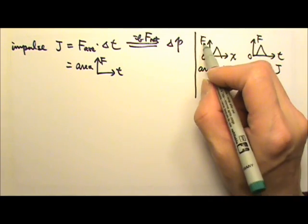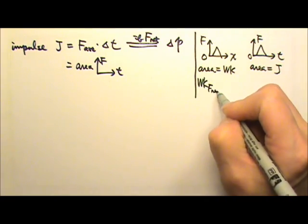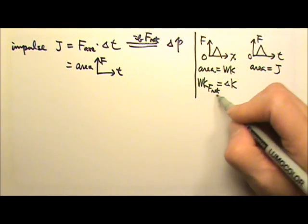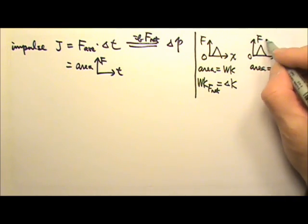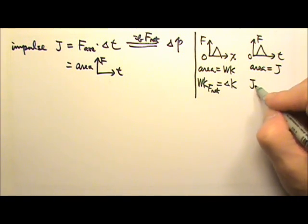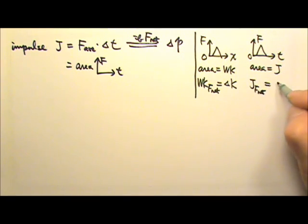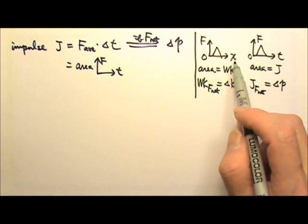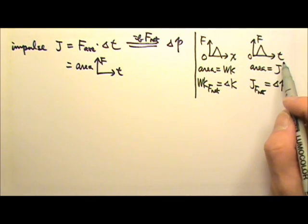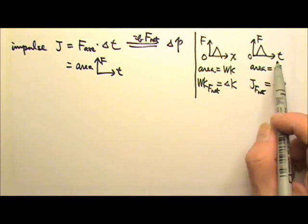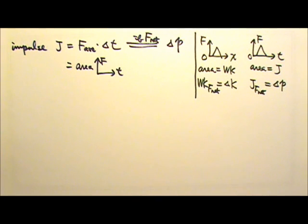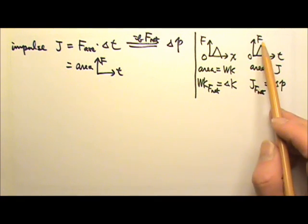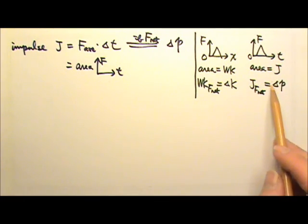If this is the net force on a force versus position graph, the area equals the change in kinetic energy — that is the work-energy theorem. If it is the net force on a force versus time graph, the area gives the change in momentum. So if you see a force graph, pay attention to whether it's force versus position or force versus time — always check the labels. For the net force versus position graph, the area gives changing kinetic energy. For the net force versus time graph, the area gives changing momentum.